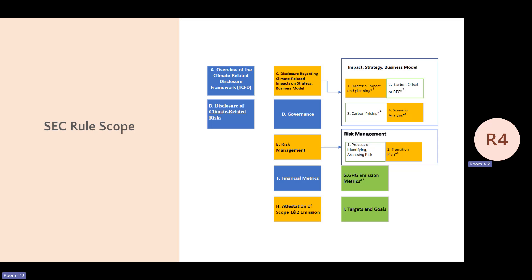This chapter covers business model, governance, risk management, and financial metrics. From the environmental perspective, what is really compelling for us is about how we're going to handle the GHG emission metrics, targets, and goals.